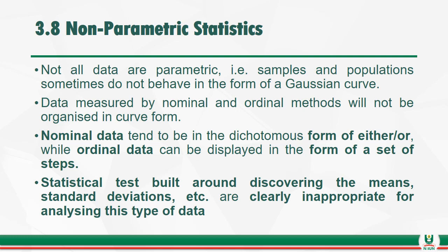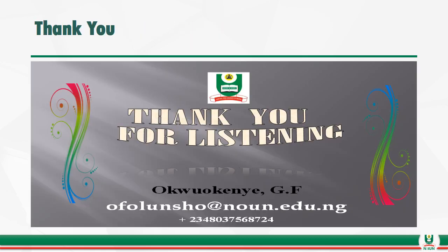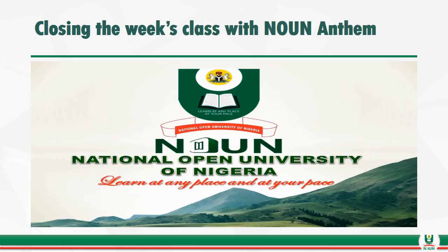Not all data are parametric — samples and populations sometimes do not behave in the form of a Gaussian curve. Data measured by nominal and ordinal scales will not be organized in curve form. Nominal data tend to be in the dichotomous form of either/or, while ordinal data can be displayed in the form of a set of steps. Statistical tests built around discovering means and standard deviations are clearly inappropriate for analyzing this type of data. Thank you for listening.